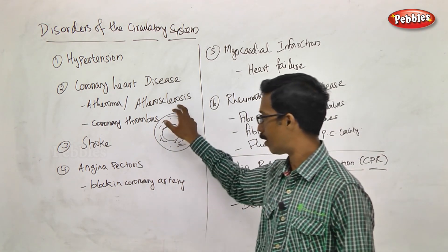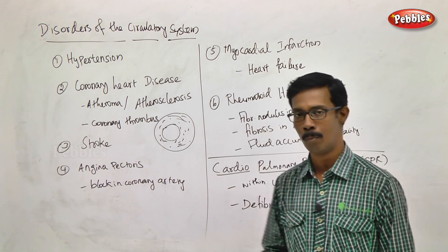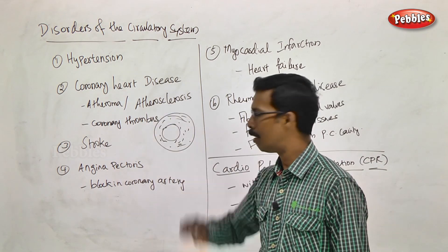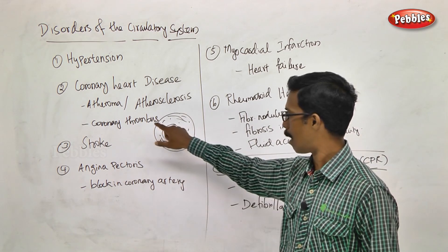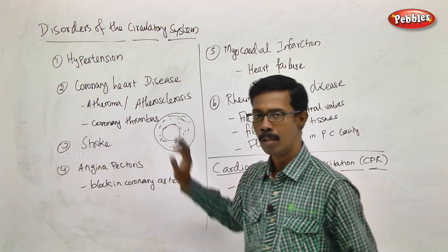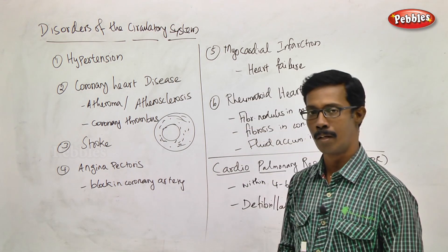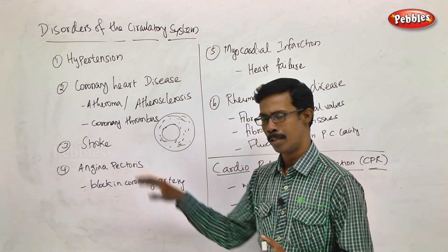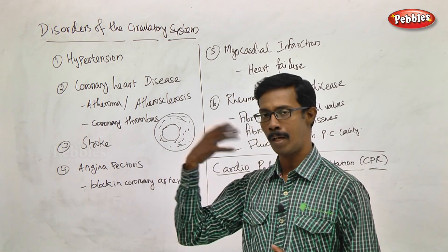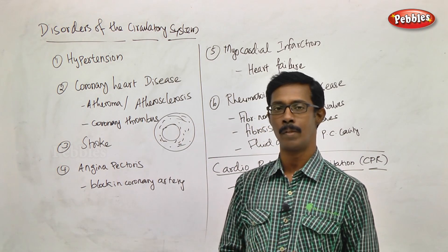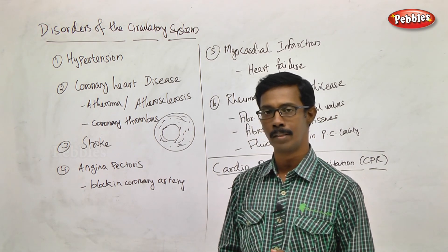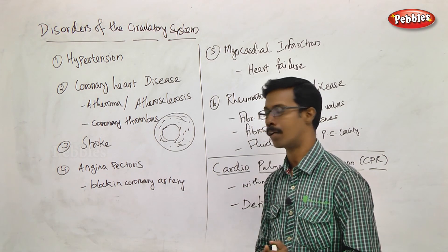Atherosclerosis is the deposition of atheroma in the blood vessels. Eventually, thrombosis is developed. Thrombosis is a complete blockage — coronary thrombosis is a complete blockage. If it is blocked in the vessels supplying the brain, it causes a brain stroke. If it is blocked in the vessels supplying the heart muscles, it causes heart failure or heart attack.